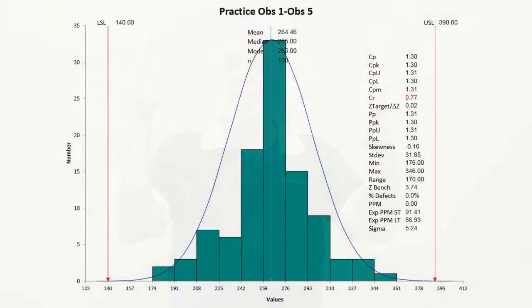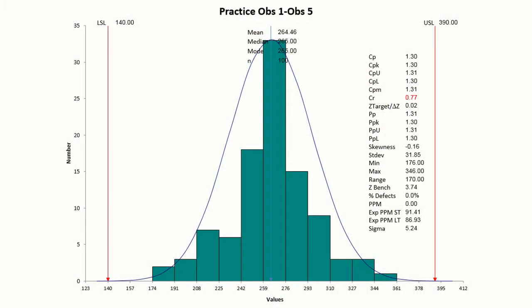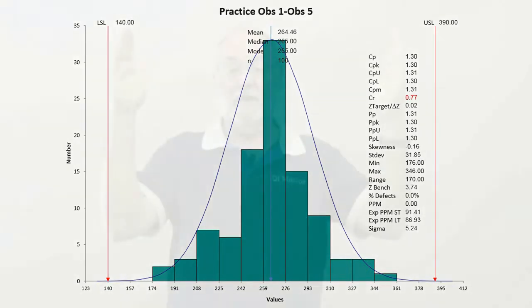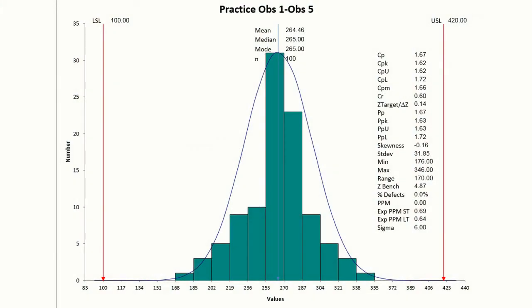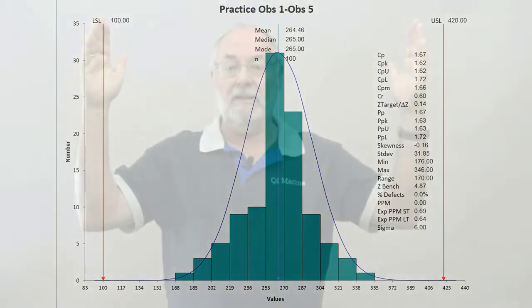Now if you expand that tolerance by a third, or one sixth on either side, that'll get you to about 1.33 CP and CPK. If you expand it by two thirds, that'll get you to about 1.66 CP and CPK. And if you go to two times the tolerance, oh my gosh, you'd be six sigma.